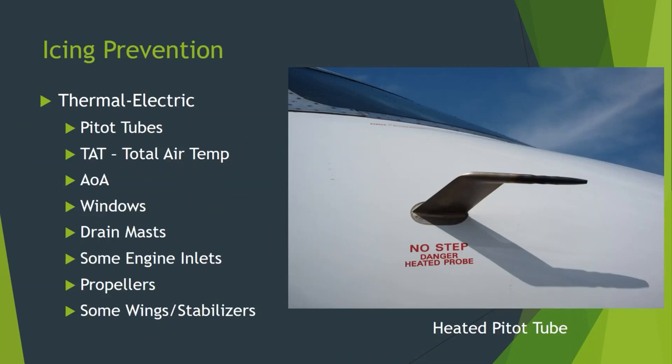Anti-ice can come in many forms. One of the most common is thermal electric. A pitot tube is heated using a resistive heating device — electric current is run through a resistor, causing it to warm up. This is often used on TAT or total air temp probes, outside air temperature probes, angle of attack probes, the windows themselves, drain masts, and some engine inlets. In some cases, propellers on turboprops will be thermoelectric, and in some cases, even some wings and stabilizers.